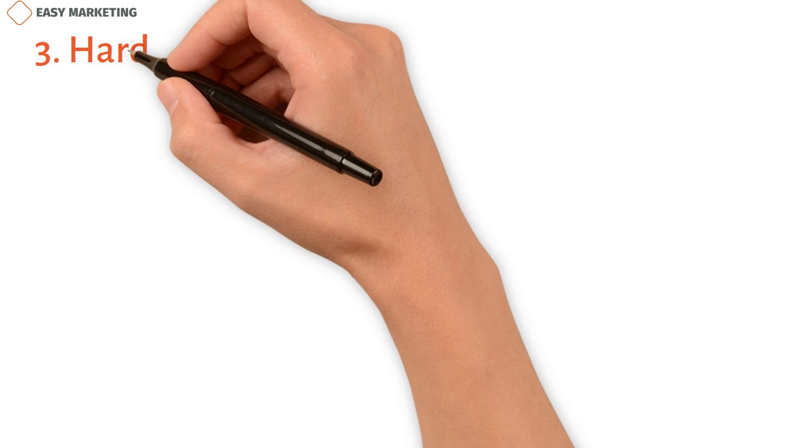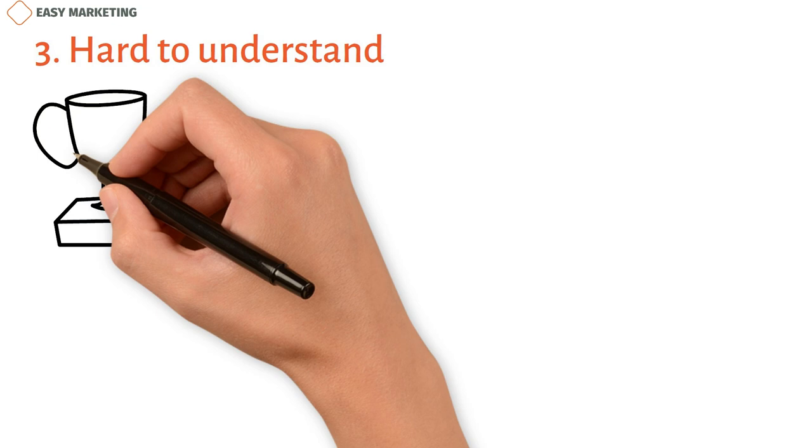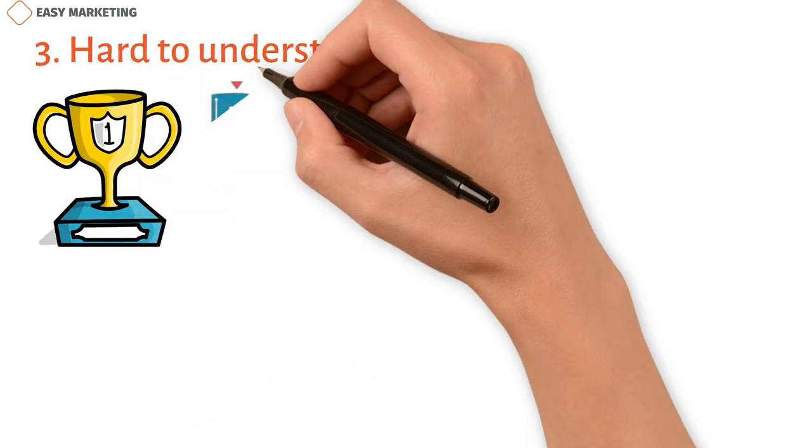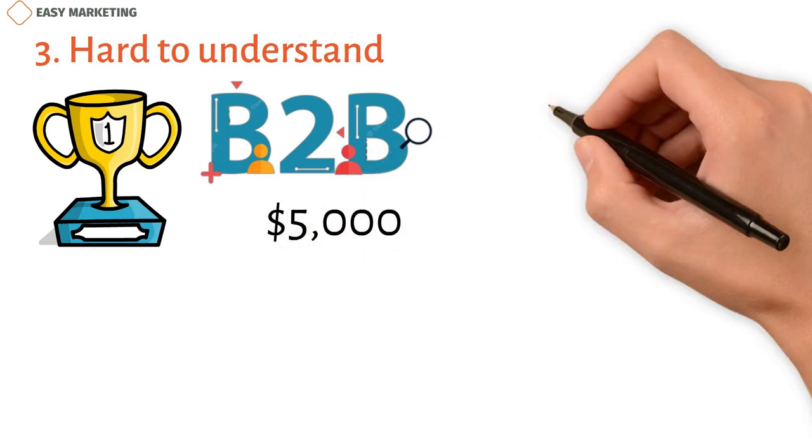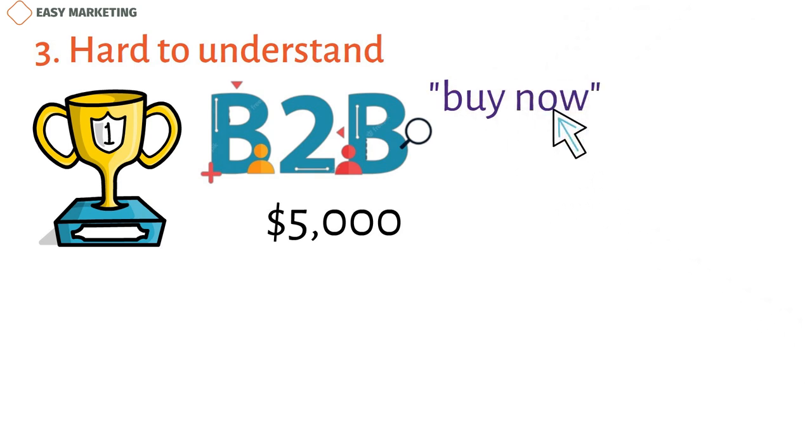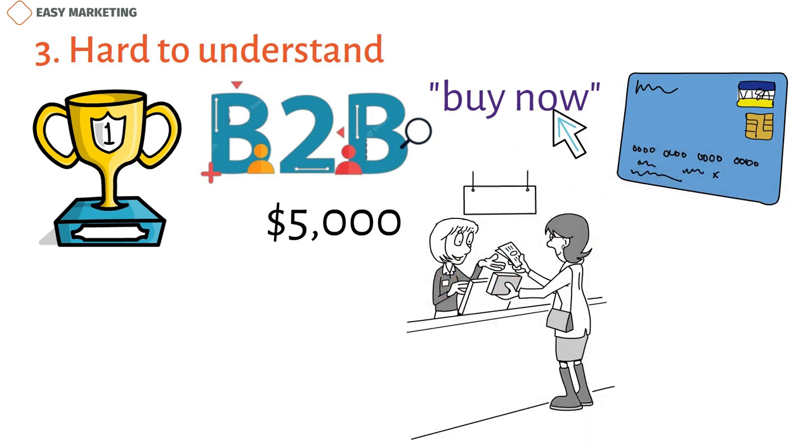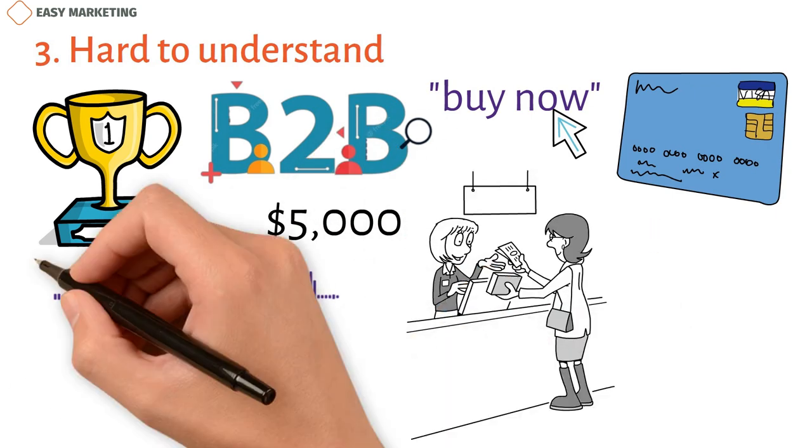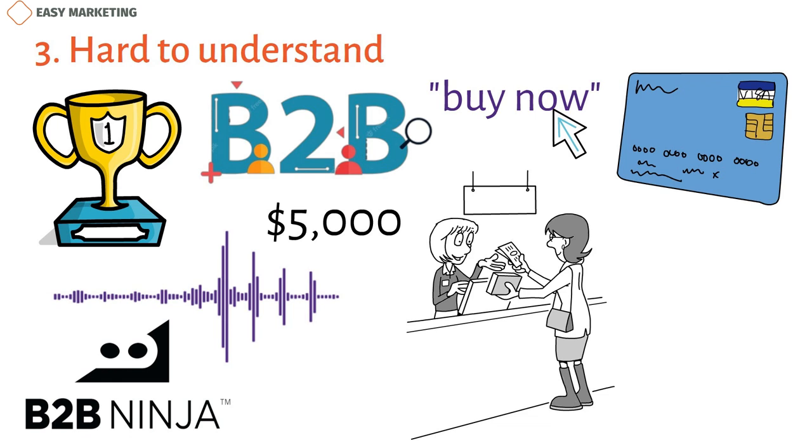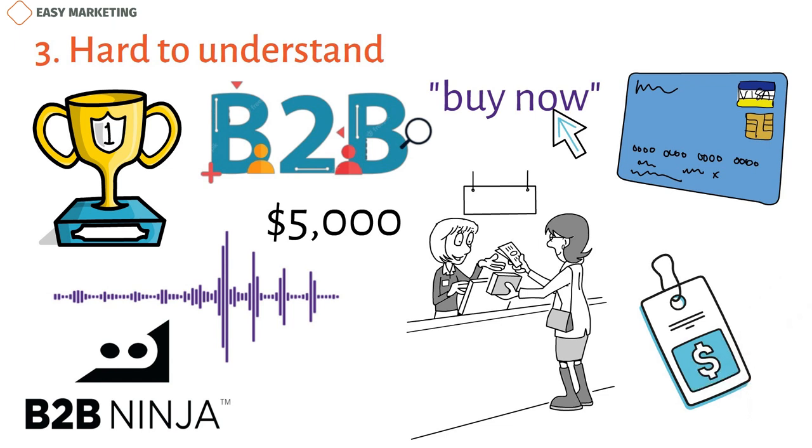Instead, your marketing might be more about making people aware of your business and getting people to contact you. The sales department then works on the leads for weeks, months, or even years before the deals close. Hard to understand: Companies that make and sell complicated goods aren't likely to have a lot of success with straight online sales to B2B buyers. If your product costs $5,000 and can be customized in many ways, it's rare that someone will click on a Buy Now button and enter their business credit card information.